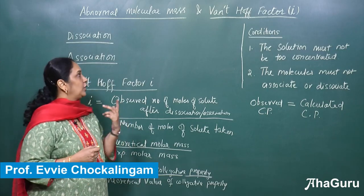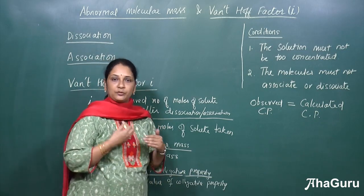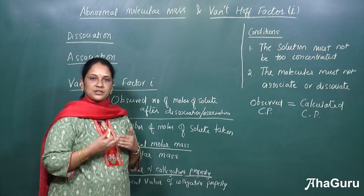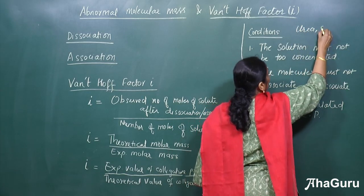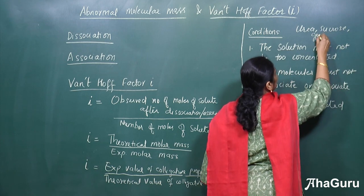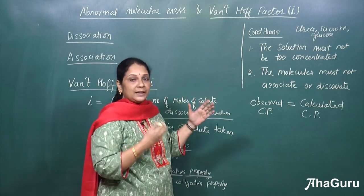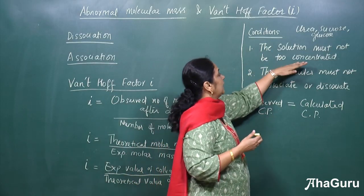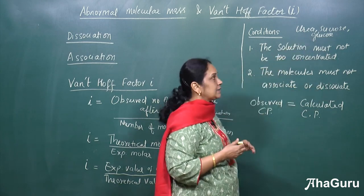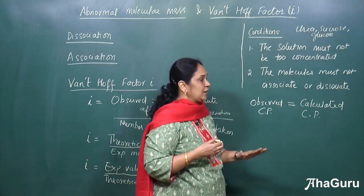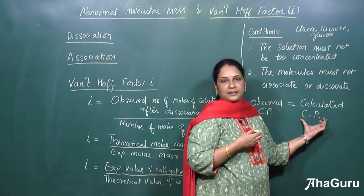Now we will see what is abnormal molecular mass and the Van't Hoff factor. Till now, whenever we calculated the colligative properties — like the four colligative properties such as depression in freezing point and elevation in boiling point — we used solutes like urea, sucrose, or glucose. These solute particles are used under conditions where the solution is not too concentrated and the molecules must not associate or dissociate. In such cases, the observed colligative property is equal to the calculated colligative property.